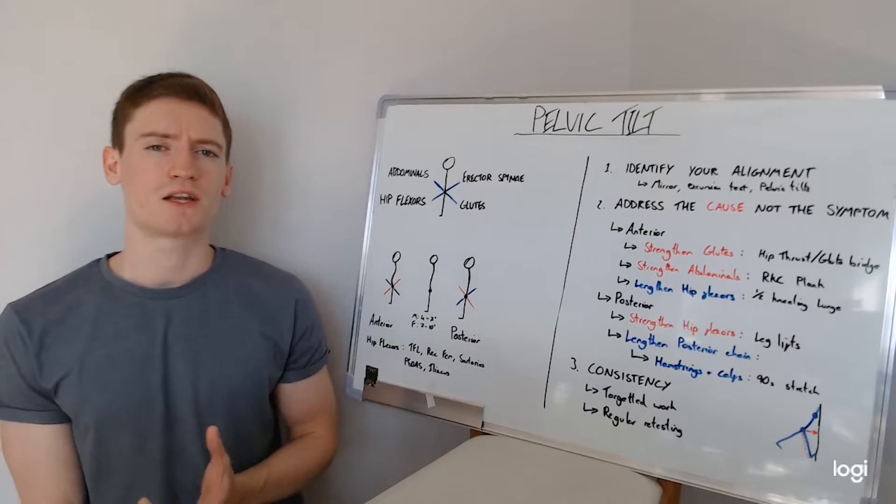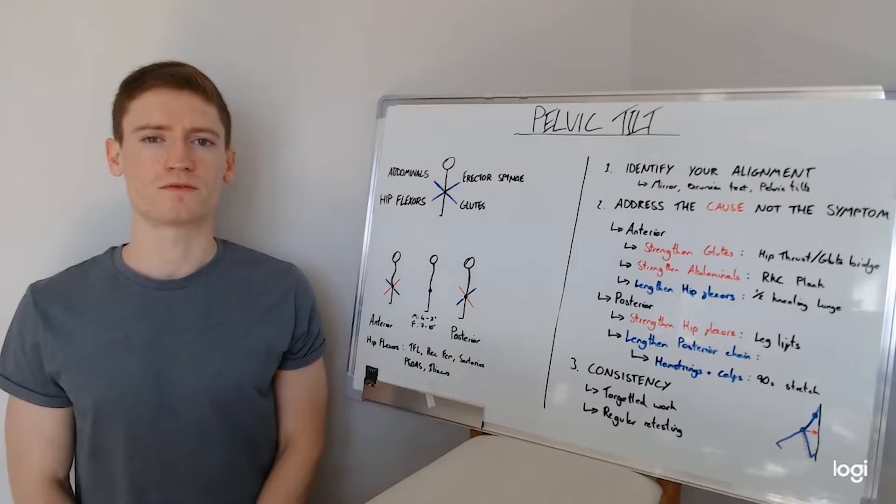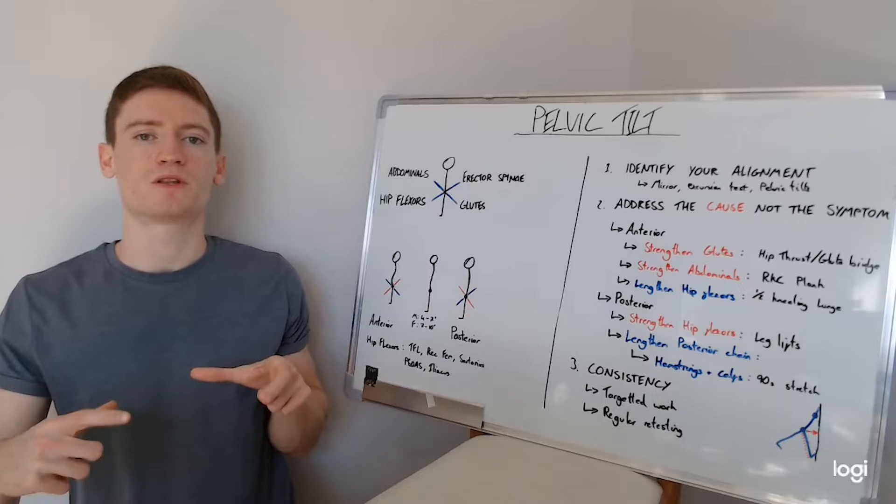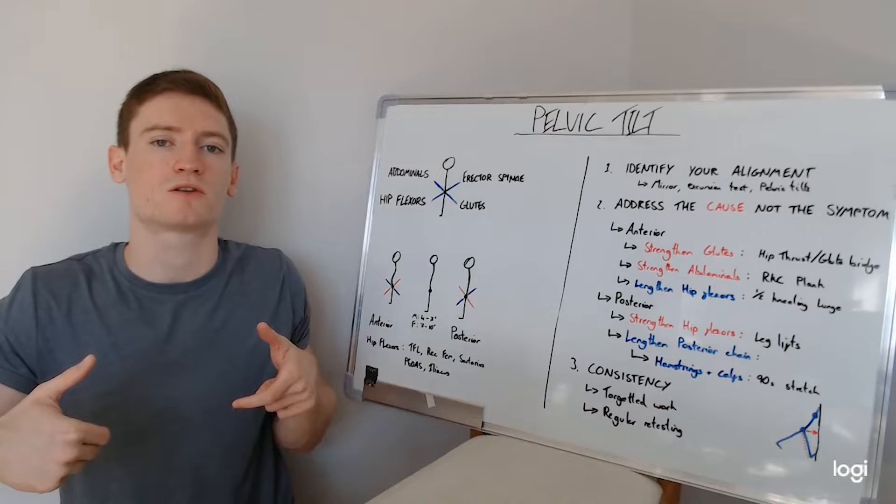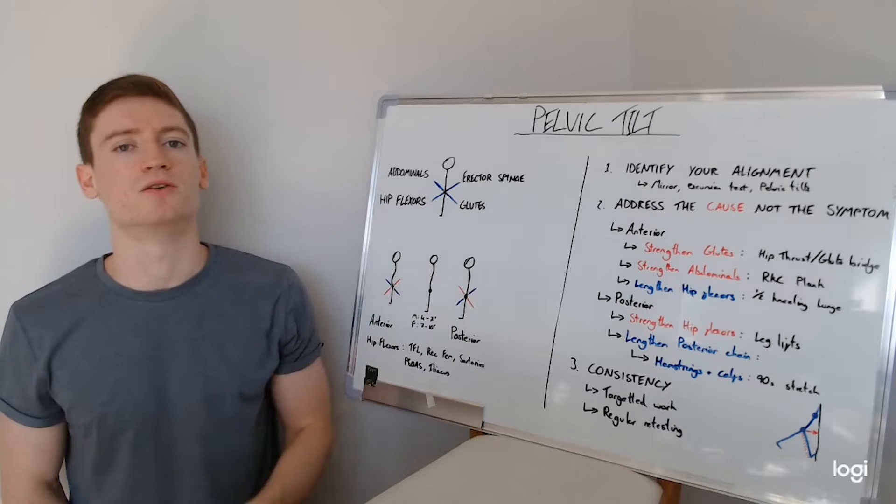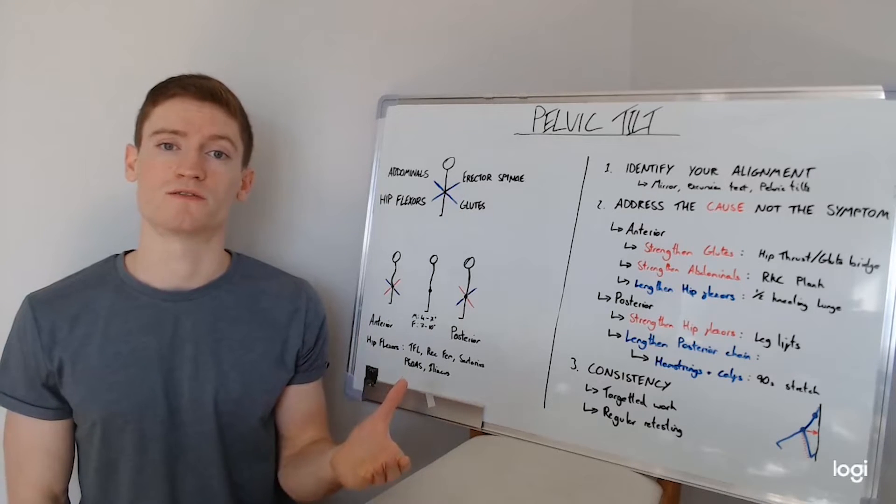Another option you can do is something called an excursion test. So this is when you stand naturally wherever is comfortable for you, the neutral position that you default to. From there, you want to actively try and tilt the hips into as much anterior pelvic tilt as possible, then go back to neutral and then from neutral, tilt into that posterior tilt as much as possible as well.